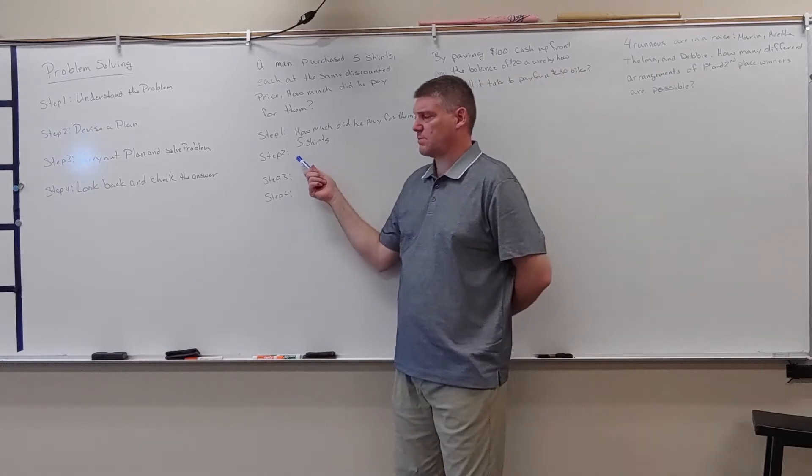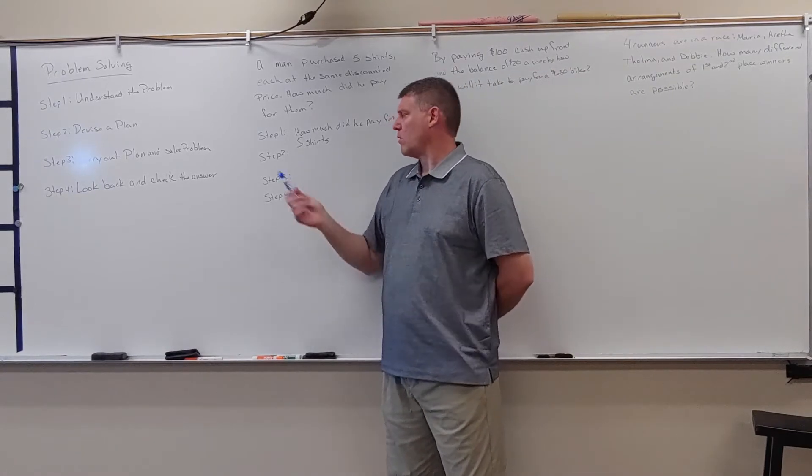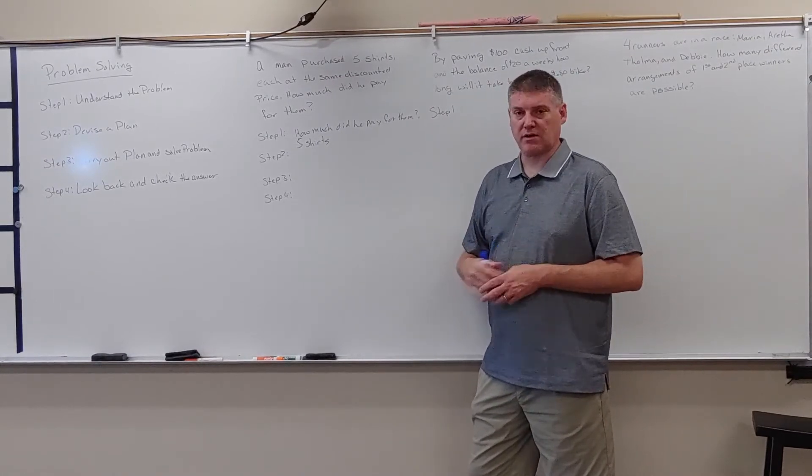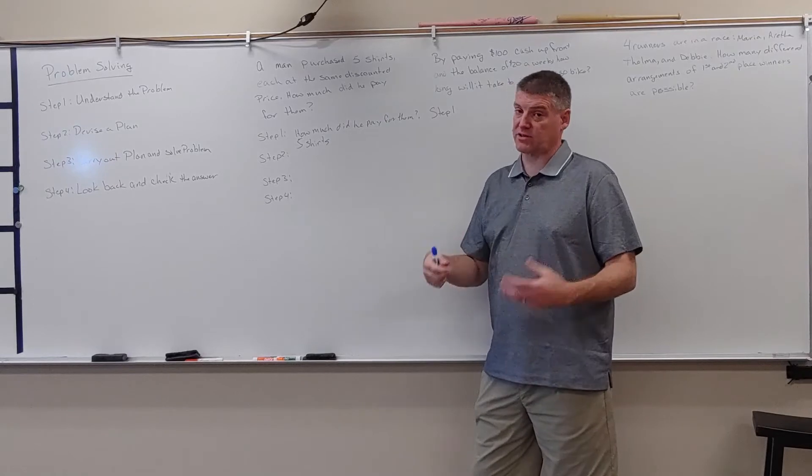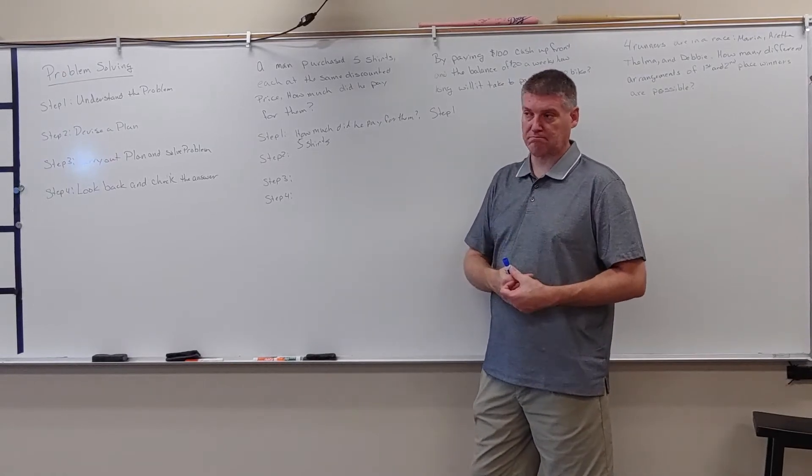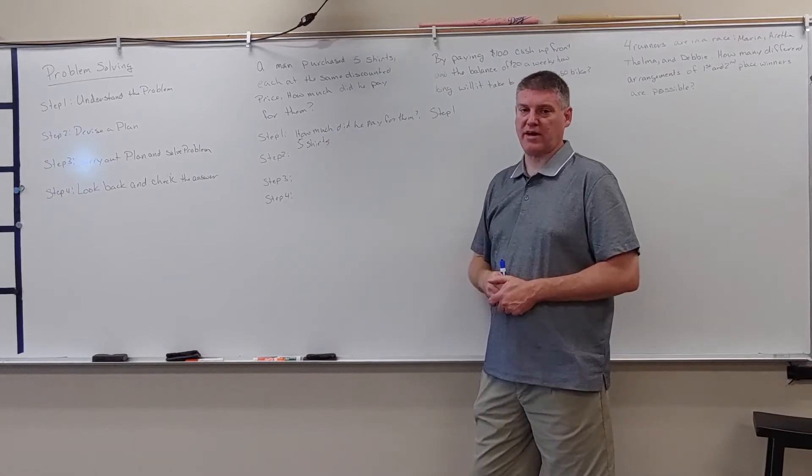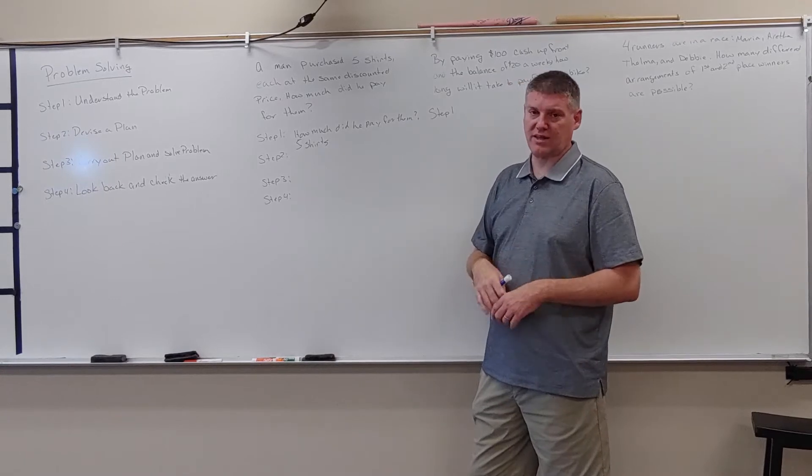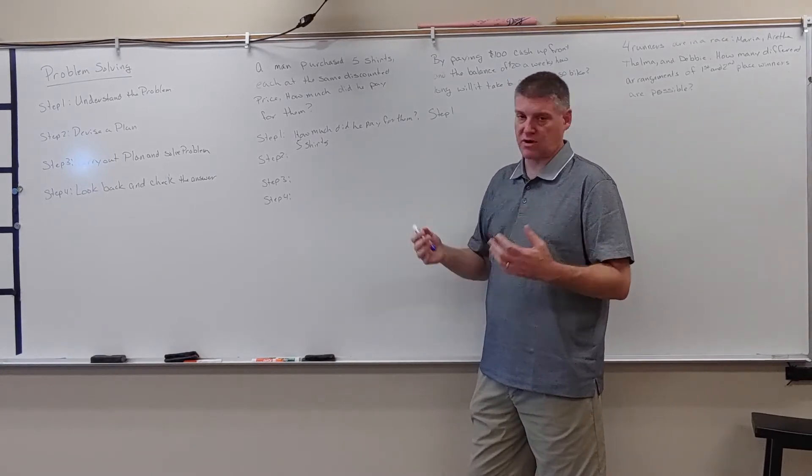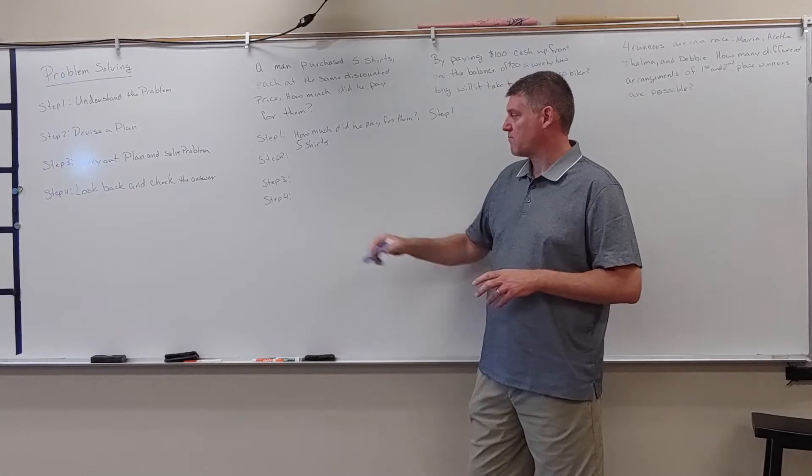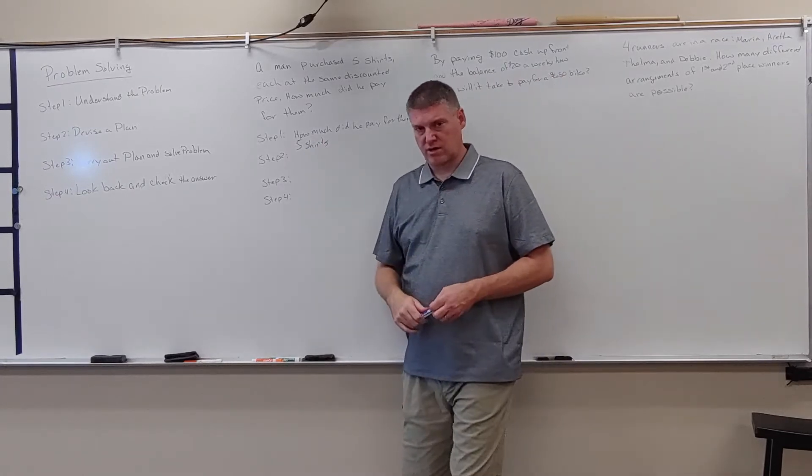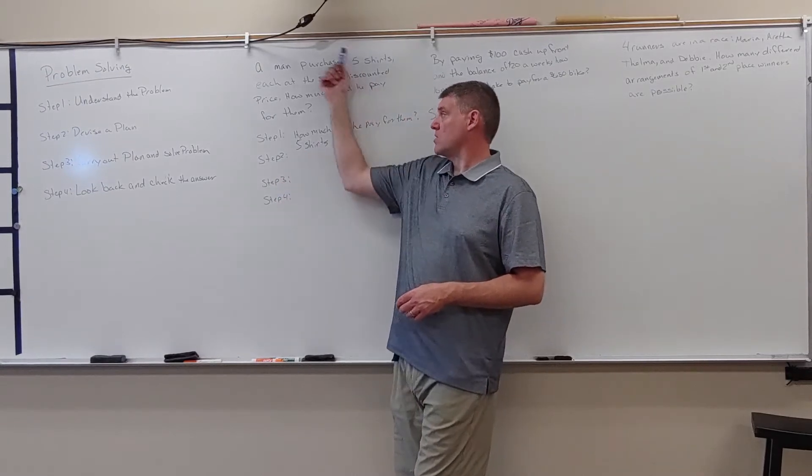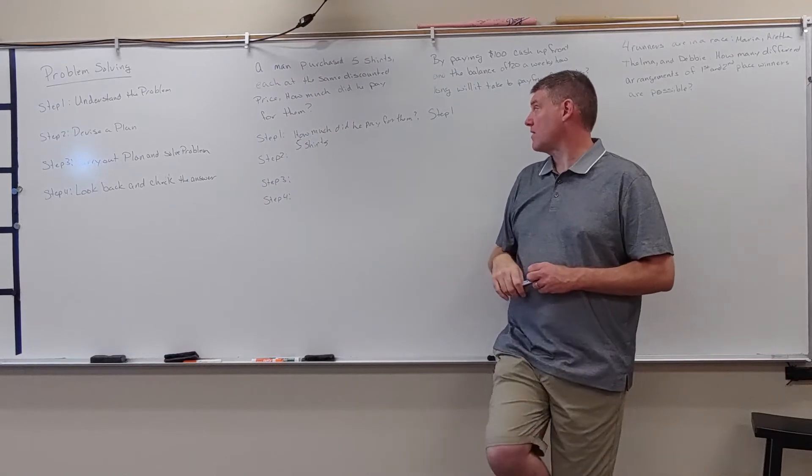Now, the problem here is now we're going to go to step two, devise a plan. When we look at this, how can we devise a plan? We're missing something. We only have five shirts. We know he had five shirts, but it's asking how much he paid for them. It doesn't give us a price for each shirt. It doesn't give us a total to work on anything. So we don't have enough information here to go to finish step two, work to step three, and step four. So this is an example here of not having enough information.